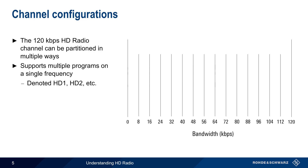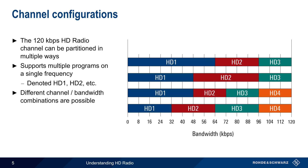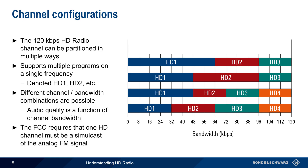Not all HD stations will transmit all four channels. The HD radio bandwidth can be allocated in many different ways, although there are certain restrictions. Note that audio quality is primarily a function of channel bandwidth, so channels with smaller bandwidth allocations are usually intended for voice rather than for music programs. Note too that in the United States, the Federal Communications Commission requires that one HD channel must be a simulcast — that is, carry the same program as the analog FM signal.